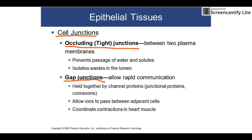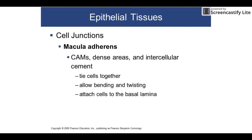Next are gap junctions, which are for communication — they're like little tunnels between cells that allow chemicals and messages to pass back and forth. This is especially important in the heart, where the electrical signal actually passes through these gap junctions. Our last type are called macula adherens — these are the strongest intercellular cement, really tying cells together.